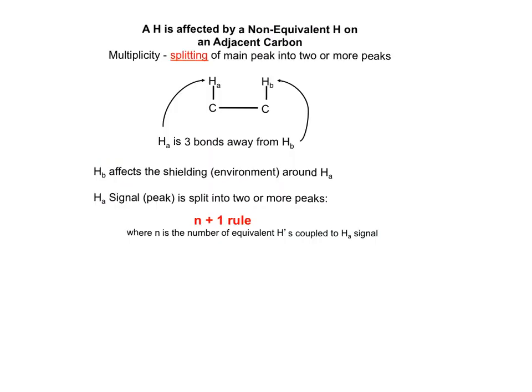Proton NMR can tell us how many protons are bonded to an adjacent carbon when we see a main peak split into two or more peaks. For example, the peak from proton HA would be split into two or more peaks due to the proton HB on the adjacent carbon. The splitting is determined by the N+1 rule, where N is the number of equivalent protons — in this case HB — coupled to that HA.